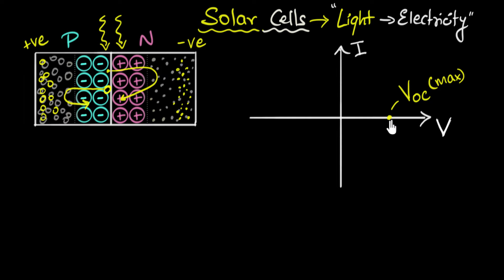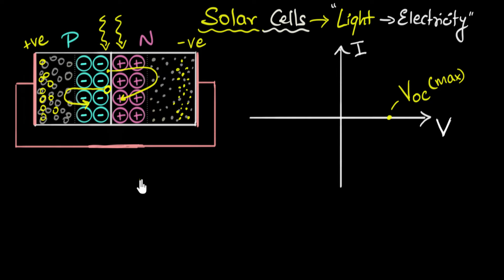Now let's think about what happens when we close the circuit. I like to start by thinking about a short circuit — zero resistance, completely shorted. Can you pause the video and think about what's going to happen and try to plot this point on the graph?